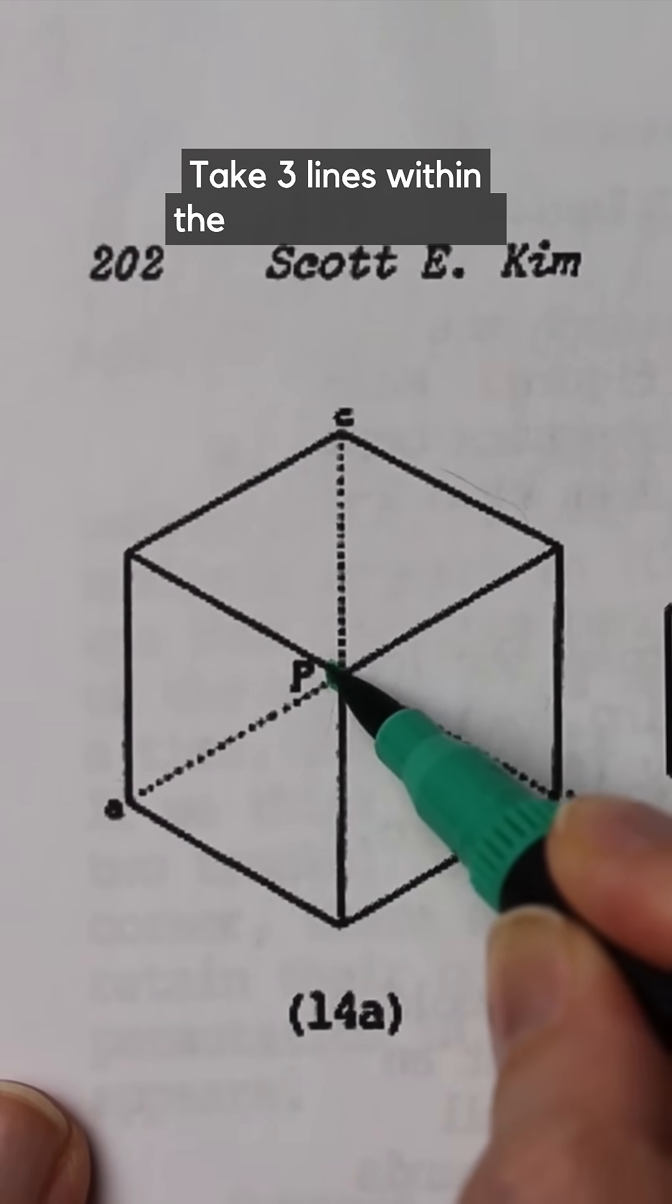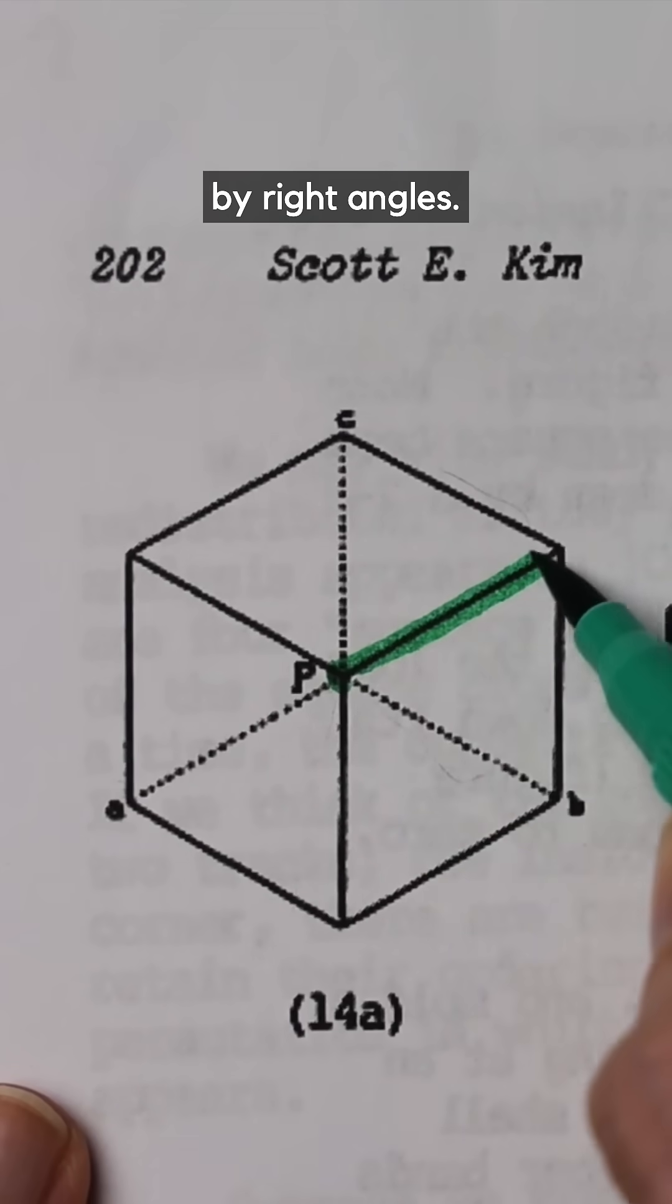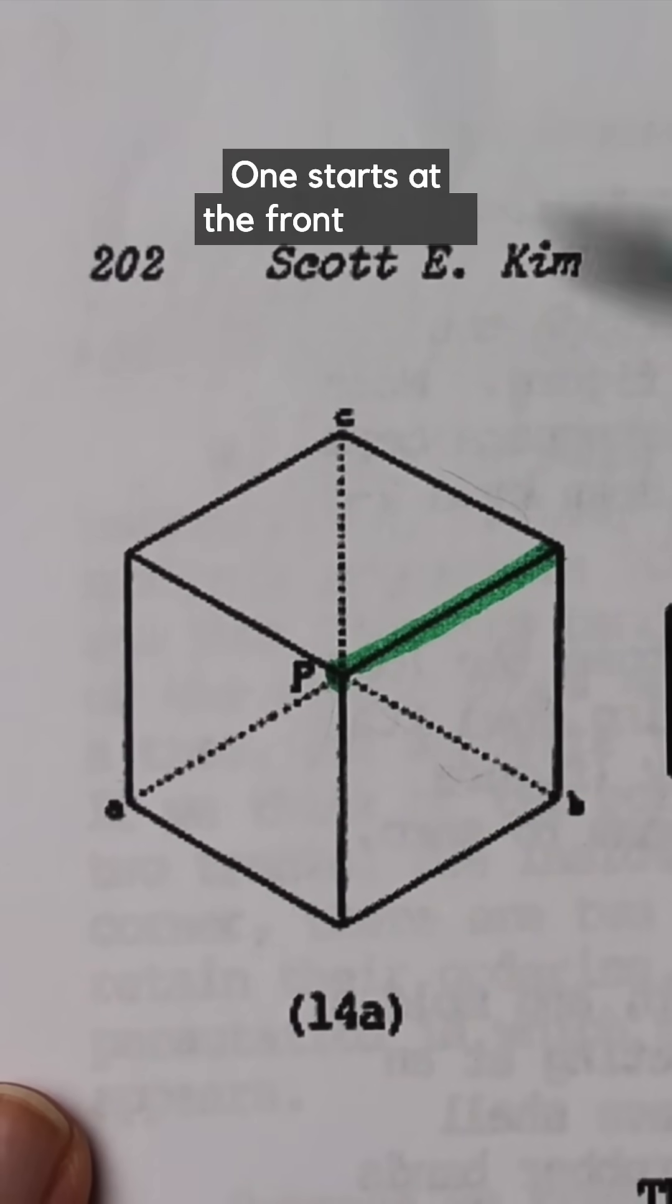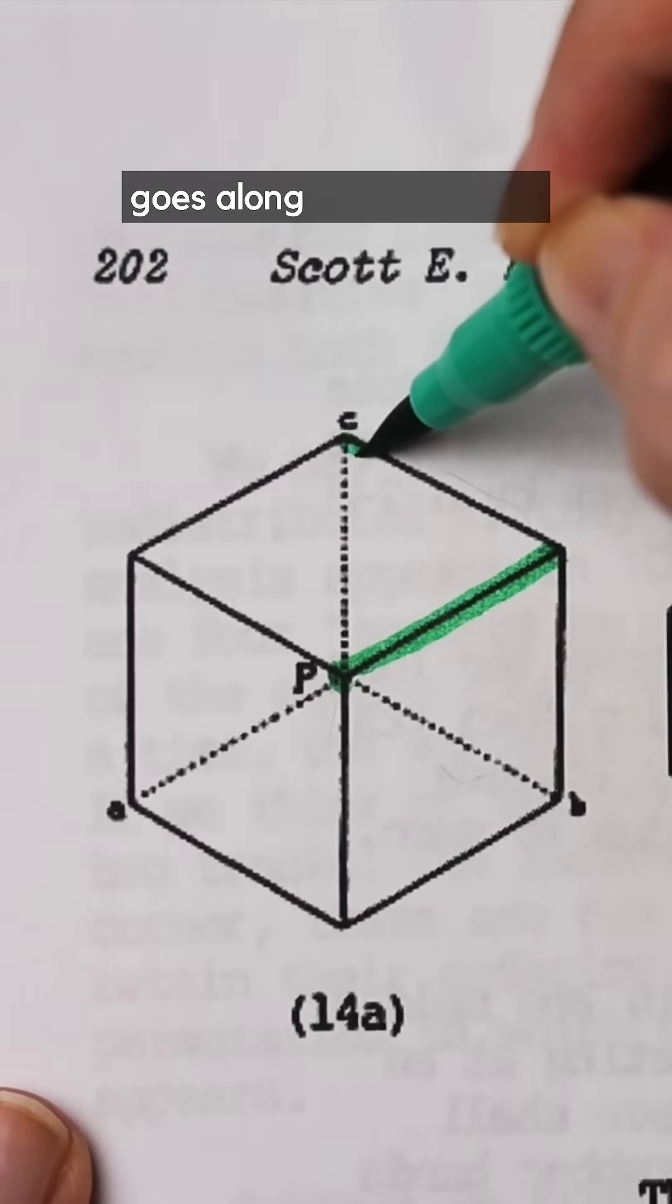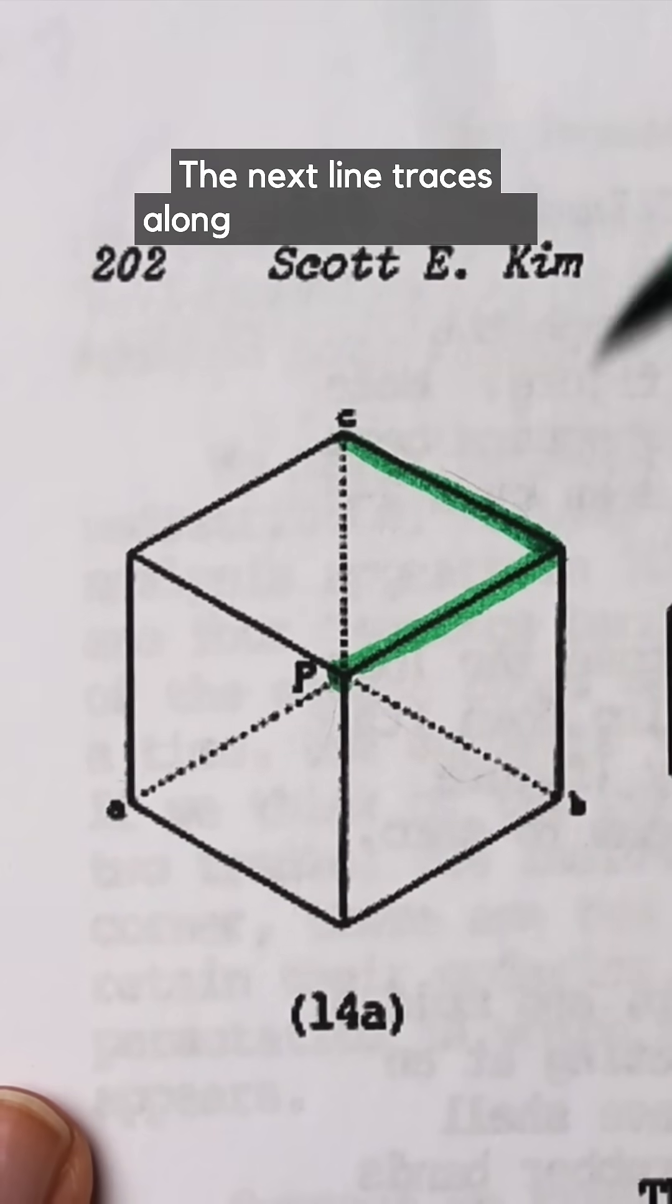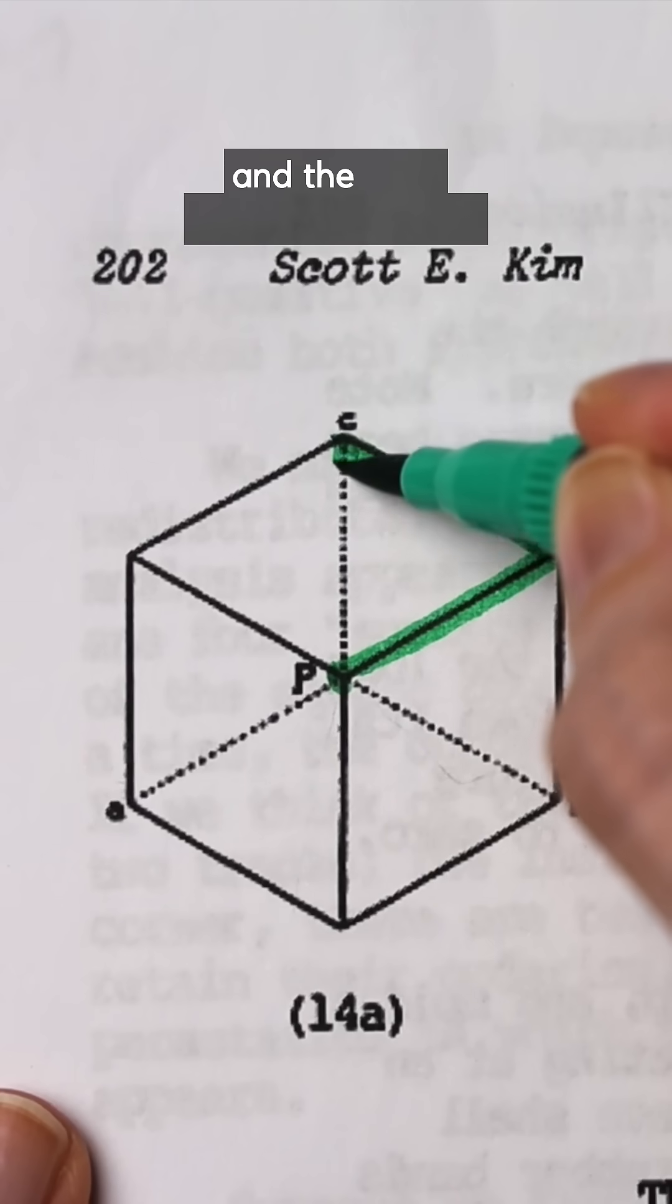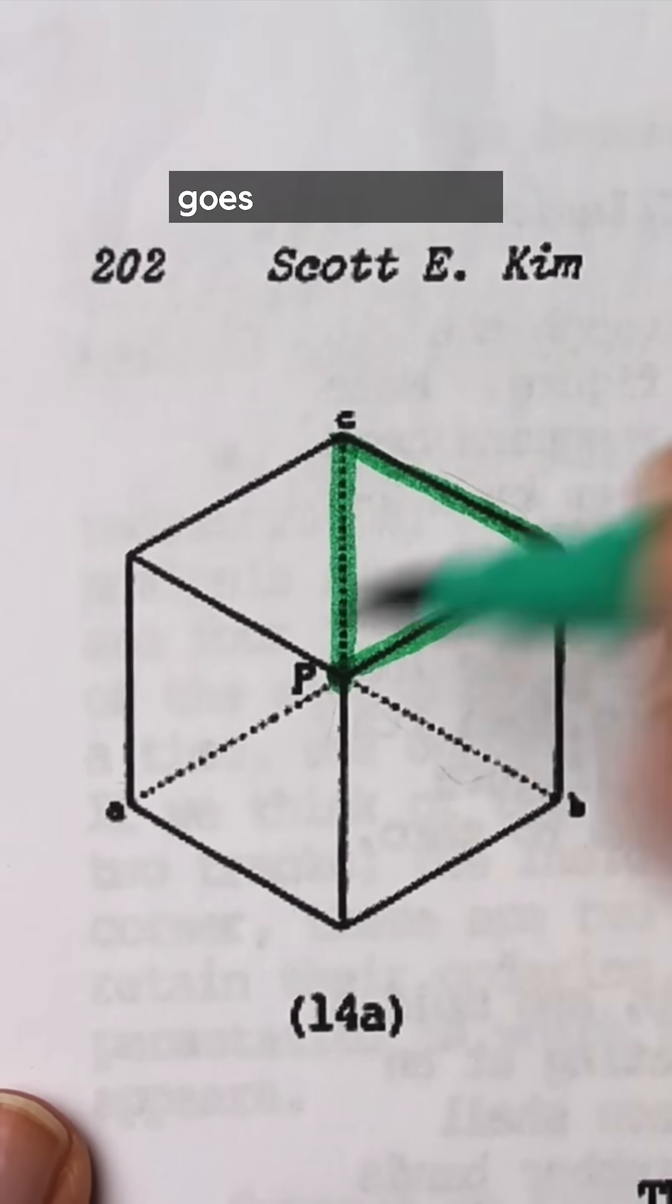Take three lines within the cube separated by right angles. One starts at the front corner, goes along this front side, the next line traces along the receding side, and the third perpendicular line goes straight down.